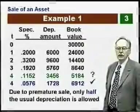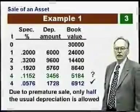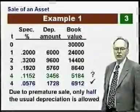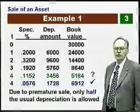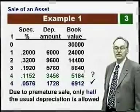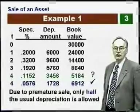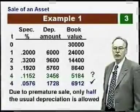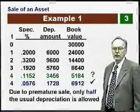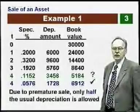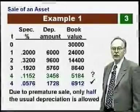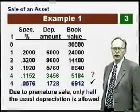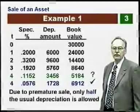This is an important thing to remember: in a premature sale, only half the usual depreciation is allowed. If we were to sell it in year six, that's not considered premature — we would take the full amount. Of course, the year six amount for a five-year property class has already been computed to be half.